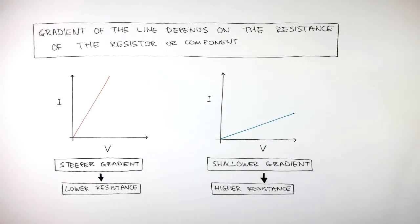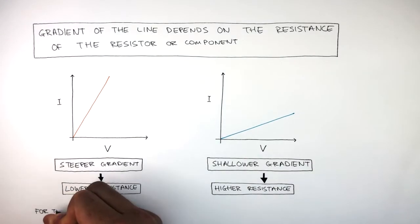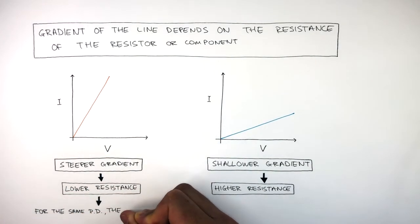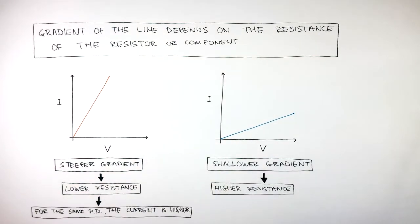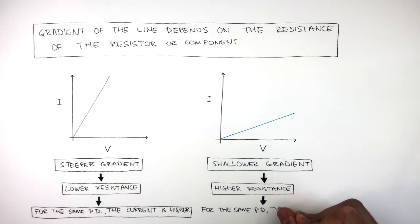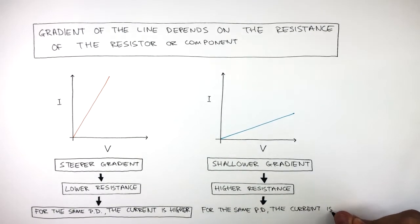The graph on the left has a lower resistance, as for the same potential difference, the current is higher. Whereas the graph on the right has a higher resistance, as for the same potential difference, the current is lower.